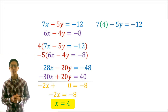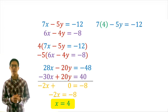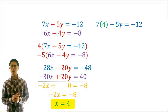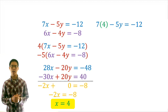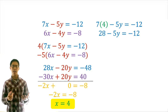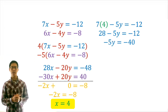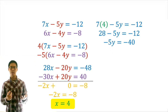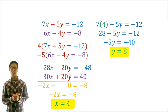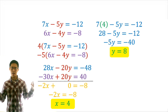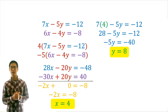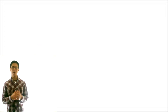Step 5, we plug the variable we found back into one of the original equations to find the second variable. So let's plug x equals 4 back into the first equation. This gives us 7 times 4 minus 5y equals negative 12, which is 28 minus 5y equals negative 12. We subtract 28 from both sides, giving us negative 5y equals negative 40. Then we divide both sides by negative 5, which gives us y equals 8. So our solutions are x equals 4 and y equals 8.